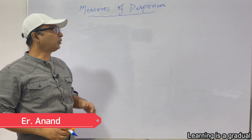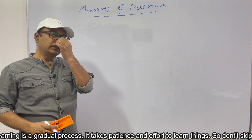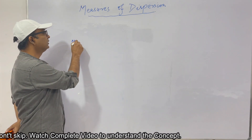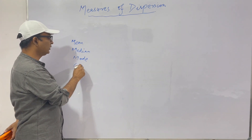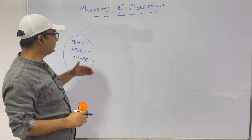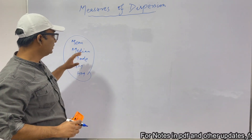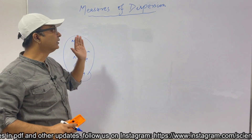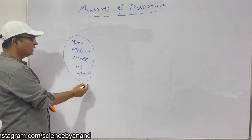Welcome students. Our topic for today is measures of dispersion. The prerequisite is that you should have a clear concept of measures of central tendency — mean, median, mode, geometric mean, and harmonic mean. You should have clear concept of these measures and their formulae at your fingertips, then you will be able to understand and compute measures of dispersion.